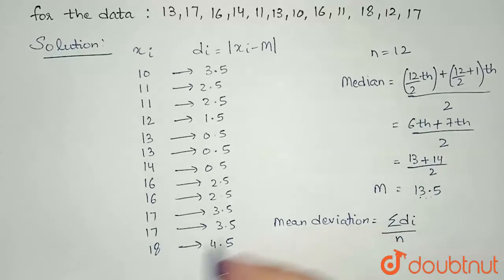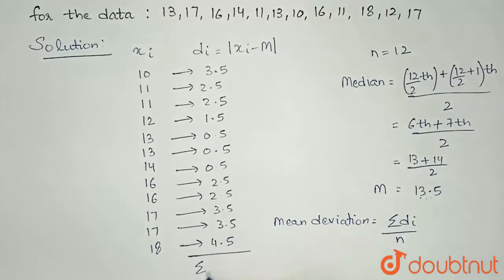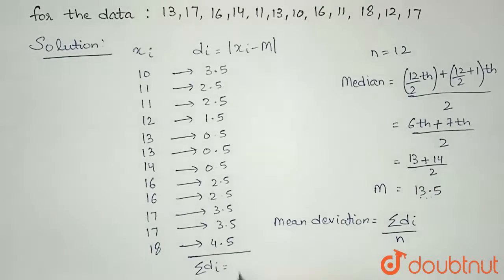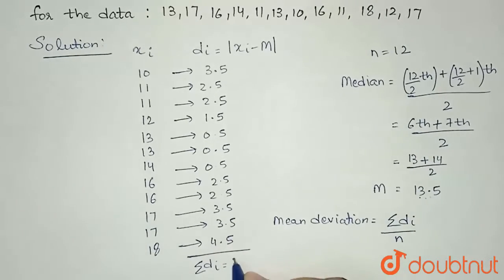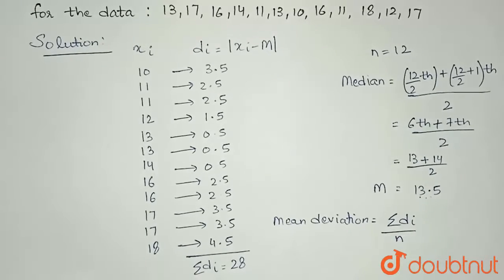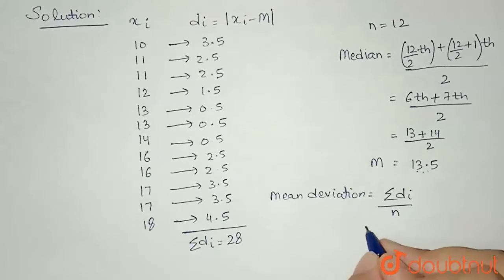I have n. Now I need to calculate summation of di. So when I sum this, I will get 28. So I can apply this formula here. Mean deviation will be 28 by 12.